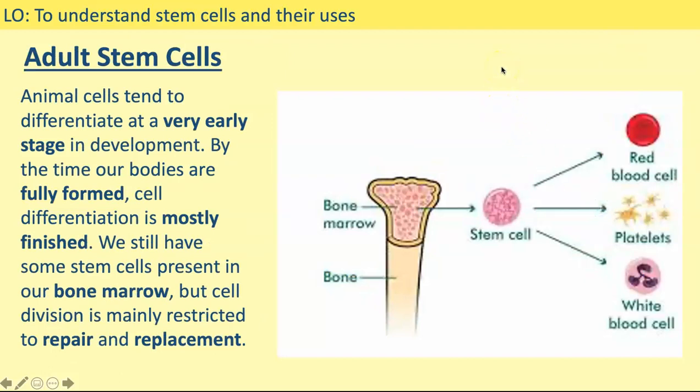The other type of stem cells we're going to look at are adult stem cells, which are found in the bone marrow — you may also see them called adult bone marrow stem cells. In animal cells, our cells tend to differentiate at a very early stage of development. As an embryo, before we're even born, we have all the different types of cells that we will need. By the time our bodies are fully formed, cell differentiation is mostly finished. We still have some stem cells present in our bone marrow, but cell division is restricted to repair and replacement rather than making new types of cells, because we've already got all the cell types we need.